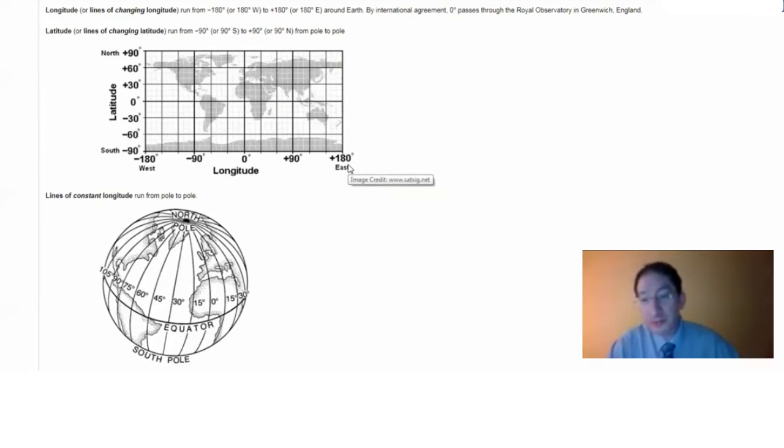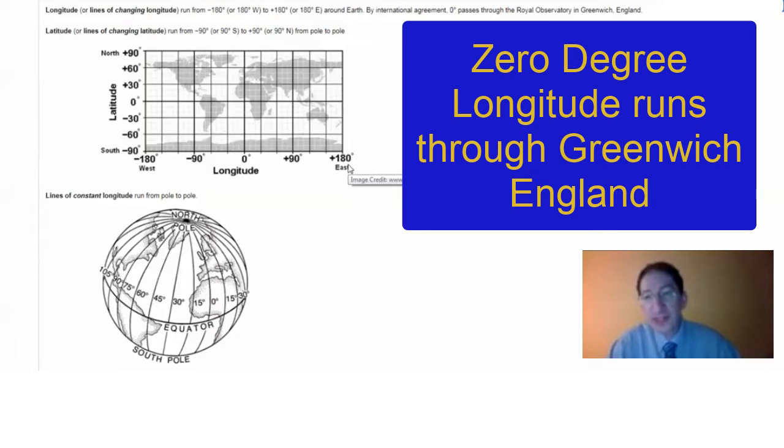0 degrees longitude has to be somewhere, and for historical reasons, it's the line that runs through Greenwich, England.